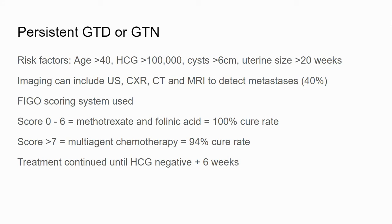Moving on to persistent GTD or gestational trophoblastic neoplasia — the risk factors are age over 40, a very high starting beta-HCG over 100,000, cysts greater than six centimetres, and a uterine size of more than 20 weeks. For staging, imaging is considered: ultrasound to reassess any pelvic deposits, chest X-ray to look for metastasis, and CT and MRI to detect more distant metastases such as brain metastases.